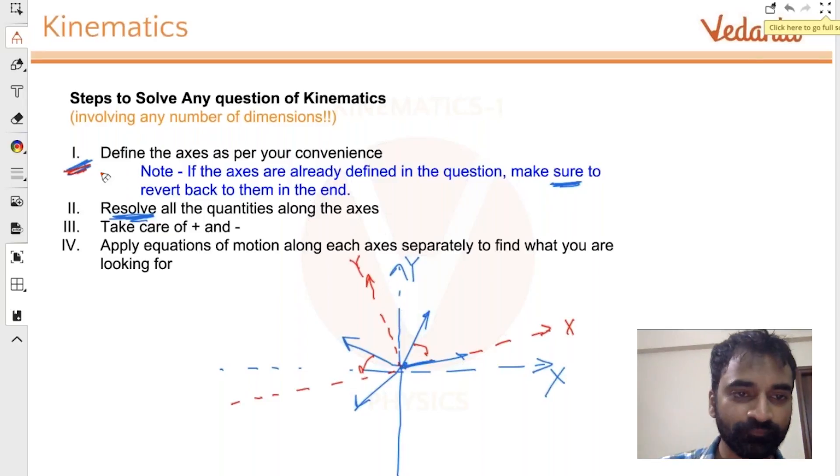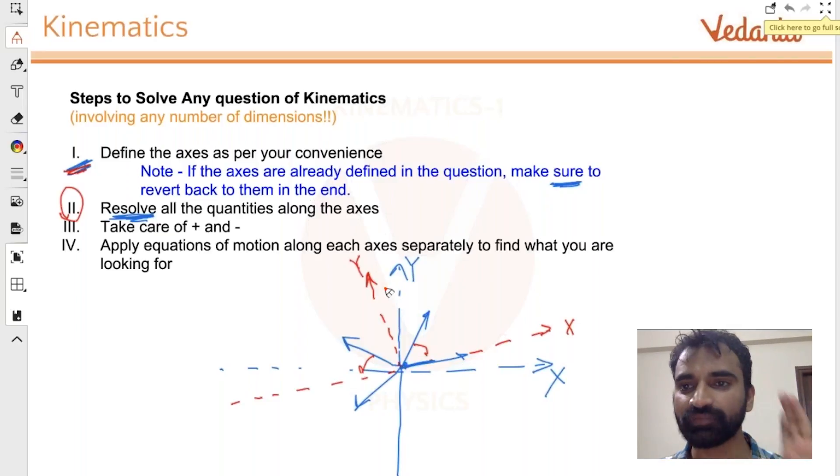Point number two: resolve all the quantities that you have according to this axis. All the quantities - if you have velocities, if you have accelerations, if you have displacements, any vector quantities that you have in the picture - make sure that they are resolved according to these axes. I'll tell you how to resolve in a very short while.